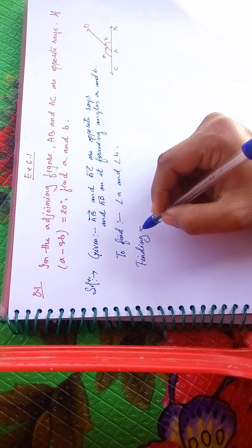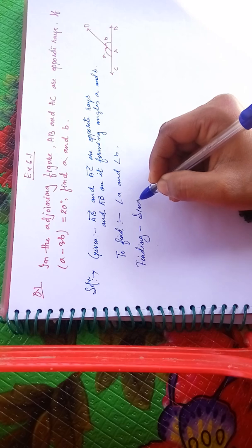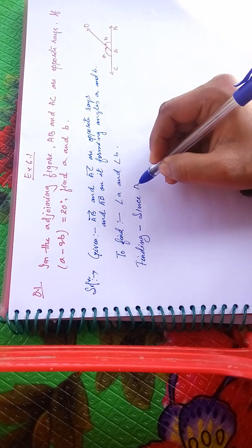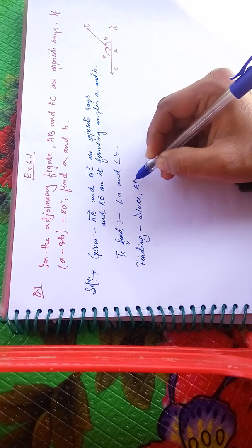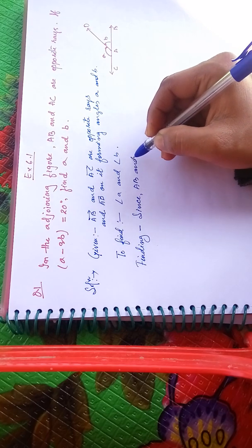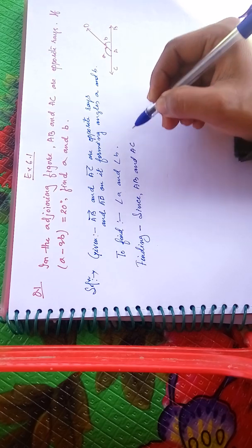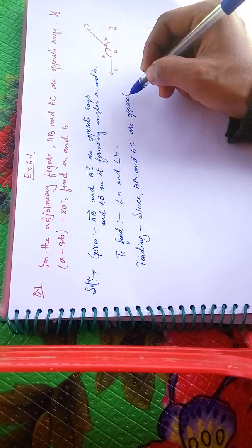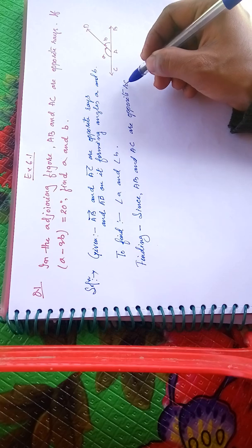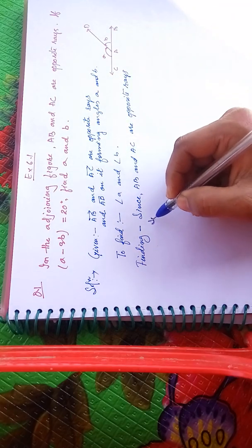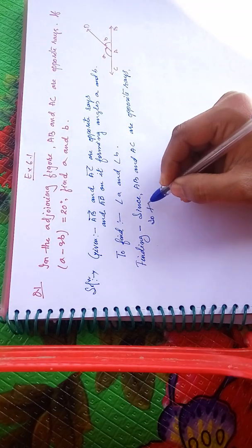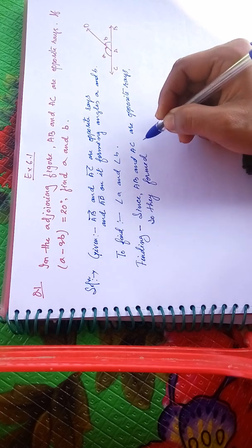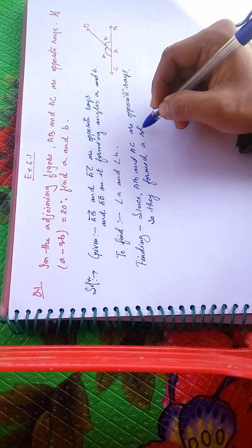AB and SE are opposite rays, so they form a straight line.